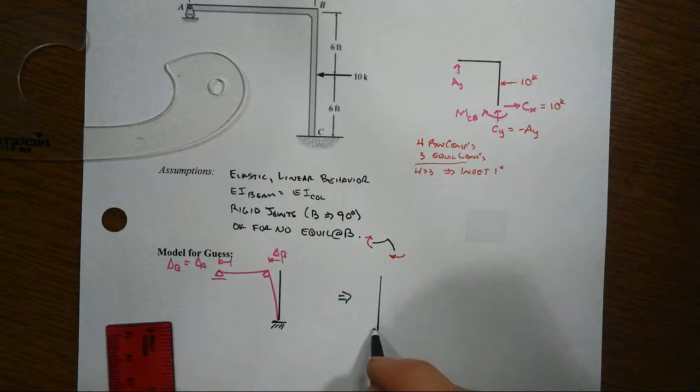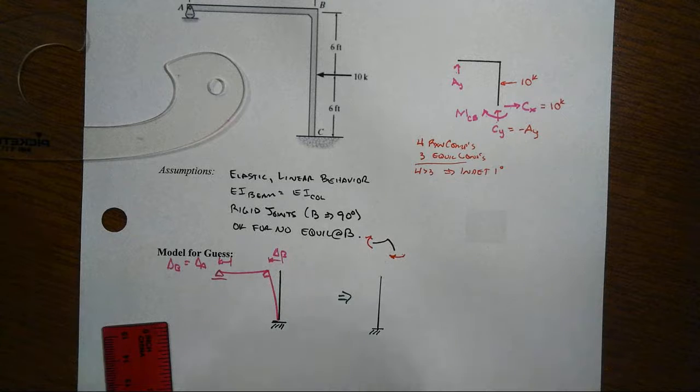What's going to enable us to do is it's going to say that our model for the guess is in effect captured mostly by the cantilever action of the column only. And just by what we've done here, we know that's going to be wrong, but it's not going to be completely wrong.